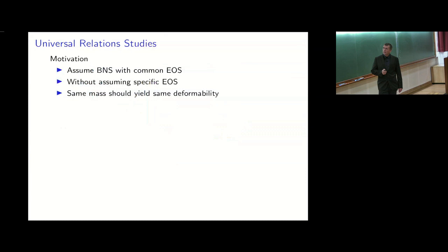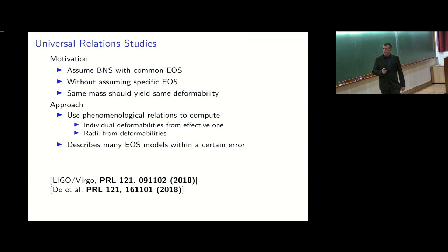Another study used universal relations. The motivation is to assume both objects are neutron stars with the same equation of state, without assuming a specific EOS. Phenomenological relations are used first to compute individual deformabilities from the effective one, and second to compute radii from deformabilities — which is why I regard this as an inference, not a direct measurement. These universal relations are not completely EOS-independent; there is a residual scatter and they were calibrated with around 12 models, or as the paper put it, 'a large set of models.'